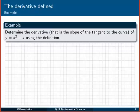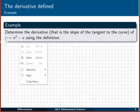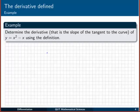Let's check it out with an example. We have to determine the derivative slope of the tangent to the curve for y equals x squared minus x. We're going to use the definition. So y equals x squared minus x, that is our function f of x.